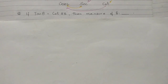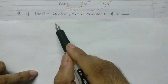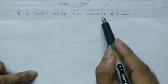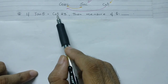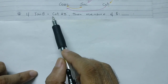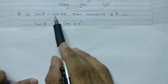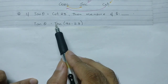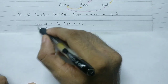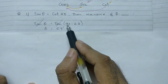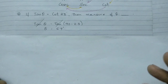Second question: if tan theta equals cot 23, then the measure of theta is dash. I want to change cot in terms of tan. All I have to do is write tan of 90 minus 23. This tan and the other tan cancel, so theta equals 90 minus 23, which is 67.